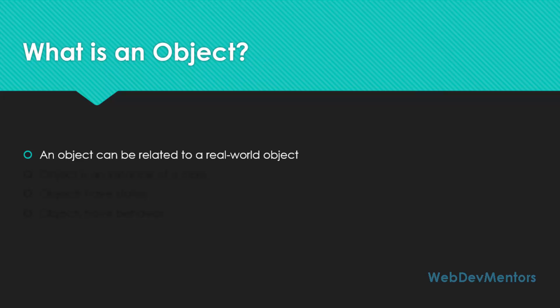the object that you create is pretty much related to the real-world object that you can see. So it can be a car, a bicycle, a dog, a house, a laptop, smartphones, PCs, or anything that you can say as a real-world object.